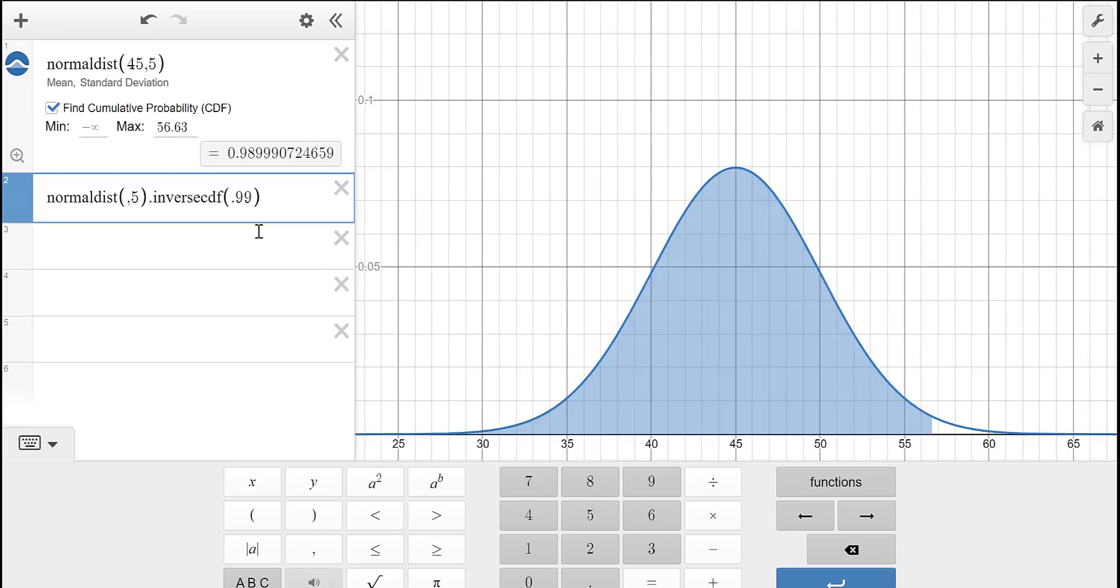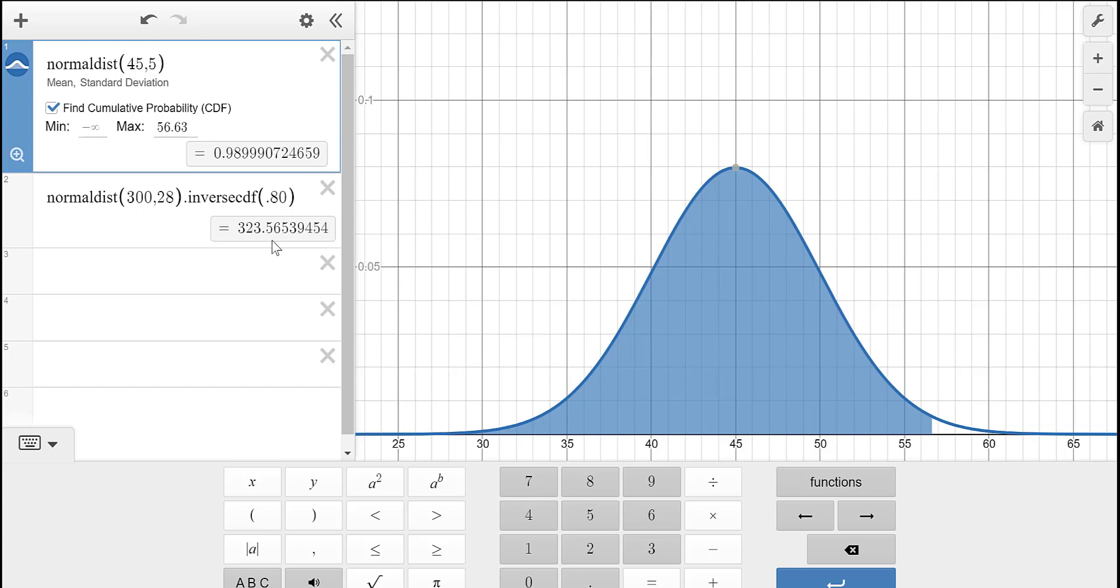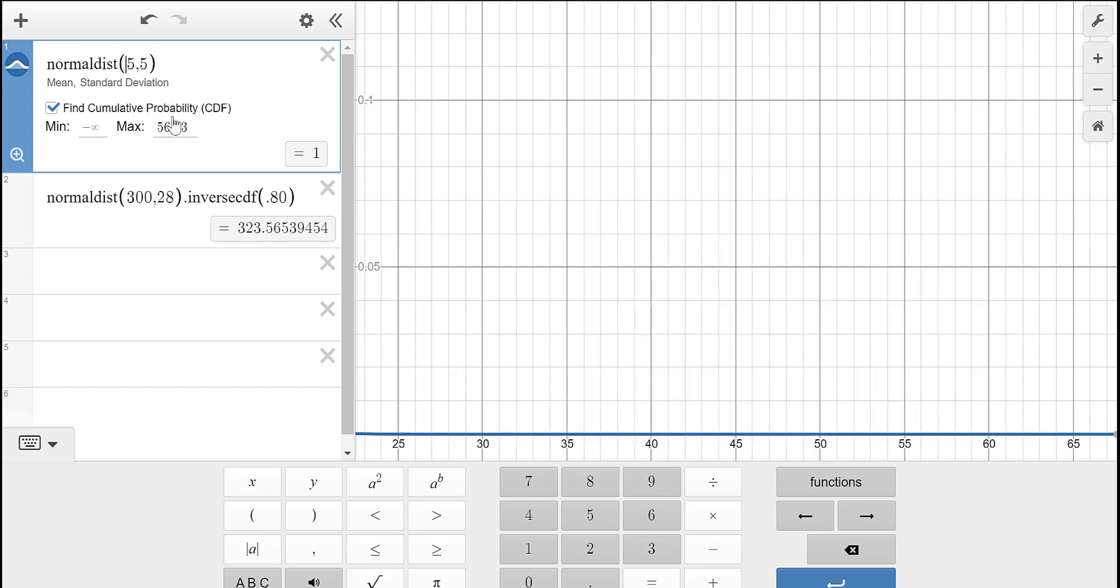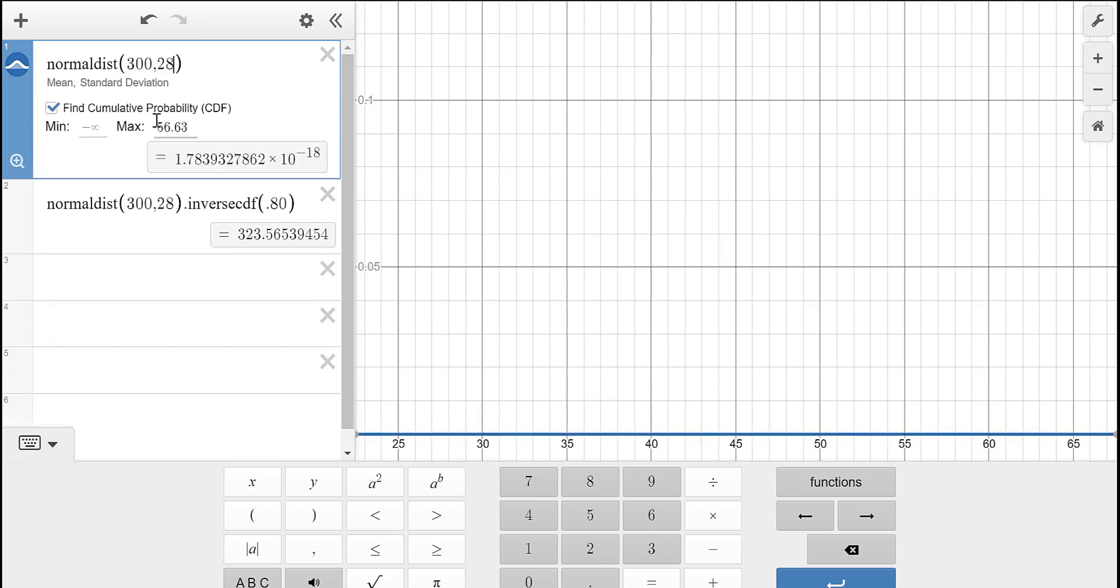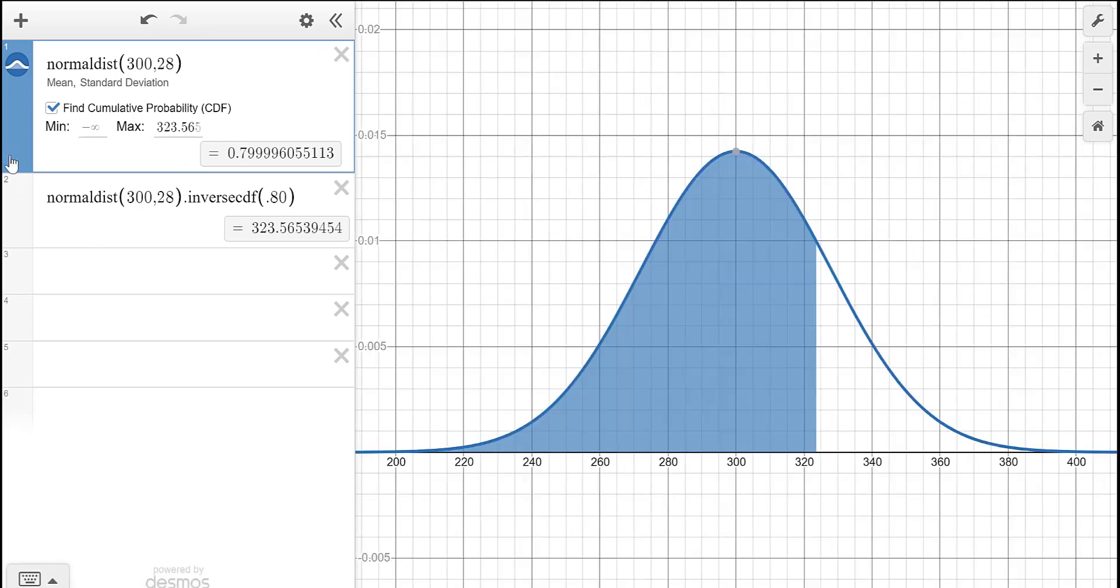Let's say we had a normal distribution with a mean of 300 and maybe a standard deviation of 28 and we wanted to know the 80th percentile, so I would put in 0.80 and it says it would be 323.56 so let's go up here and just duplicate that. Here's 300 with a standard deviation of 28. And then that says the number that we should check is 323.565 and I will hit the zoom so you can see that in action.